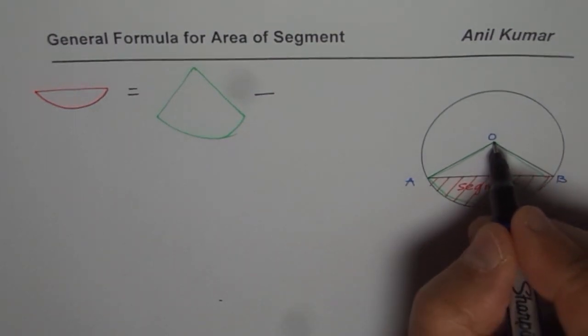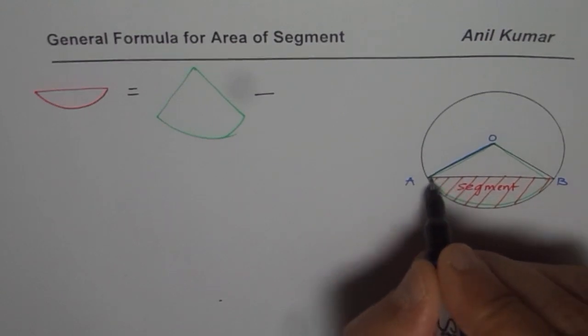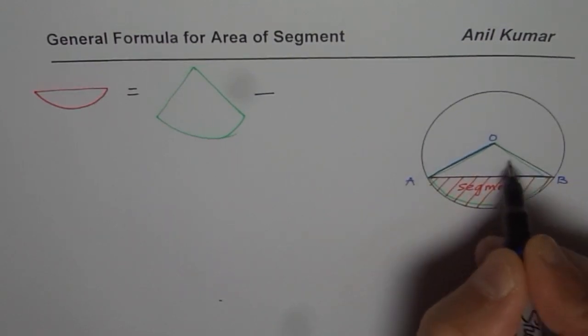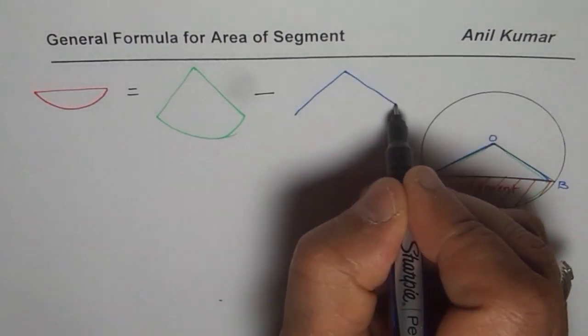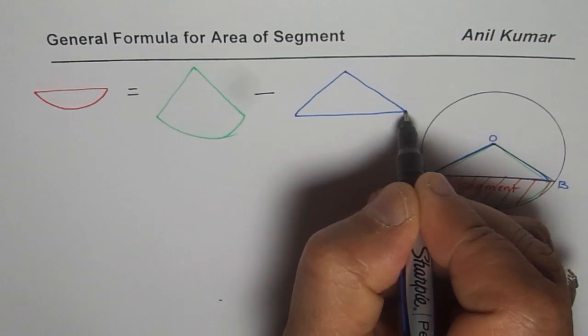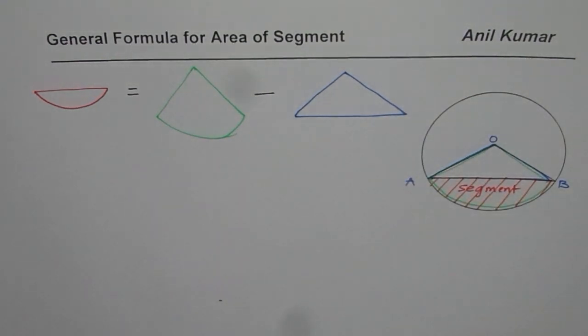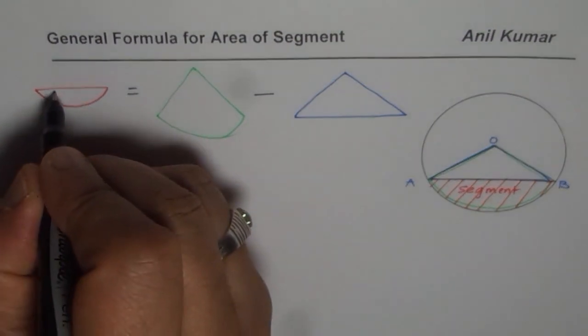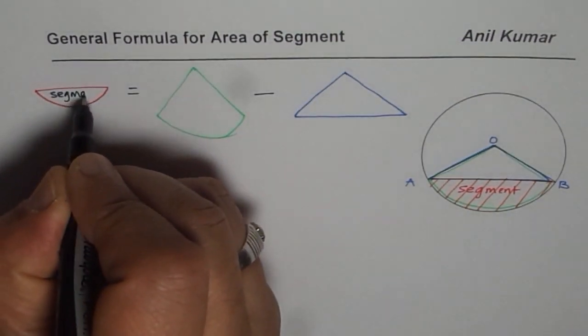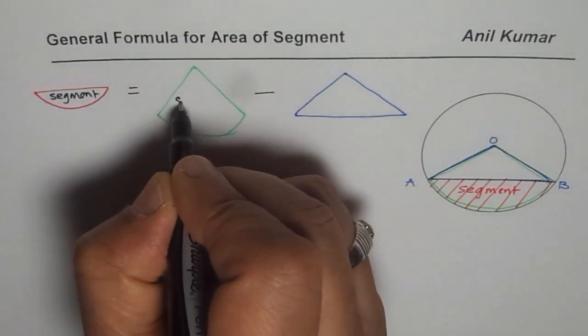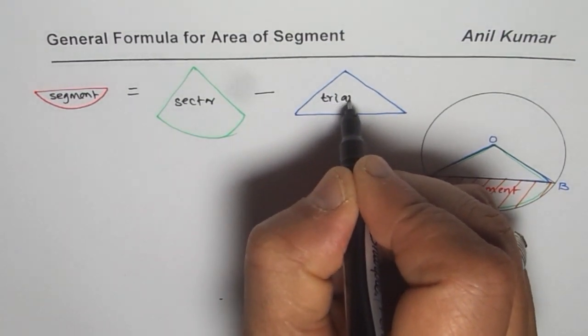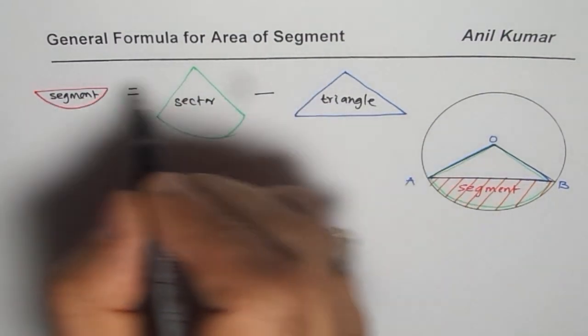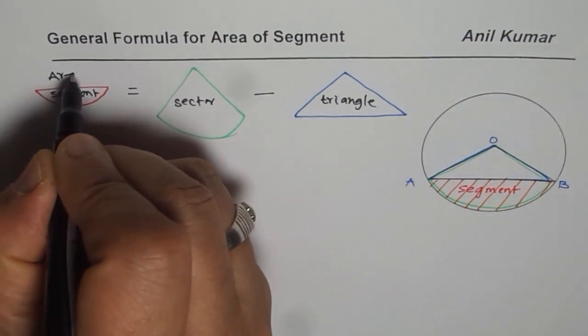So let me say that is my triangle. So that is the formula which we want to derive. So area of the segment is equal to, this is the segment, this is the sector, and that is a triangle. So this is how their areas are related.